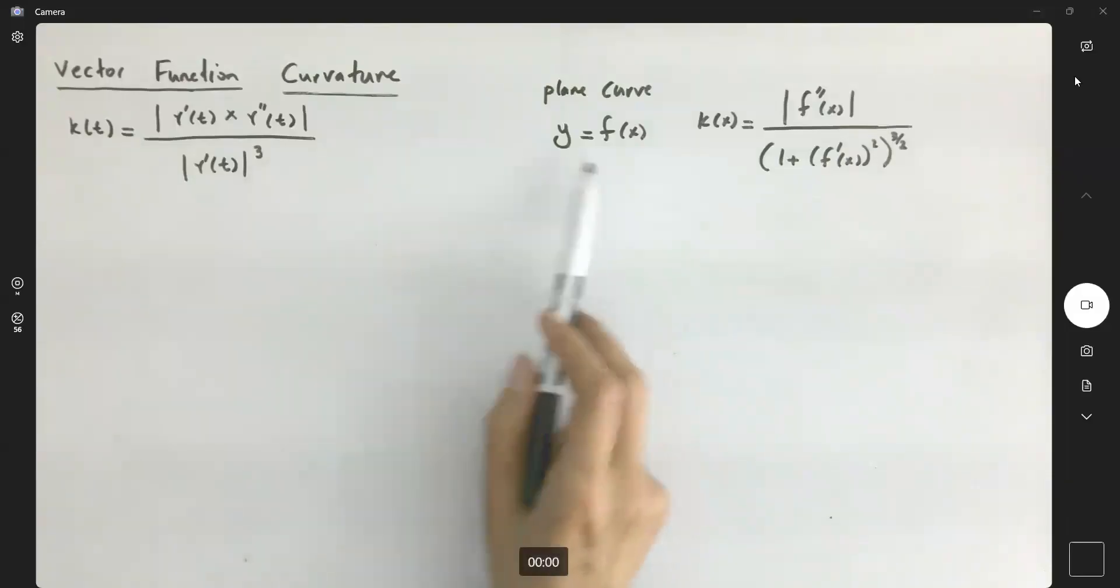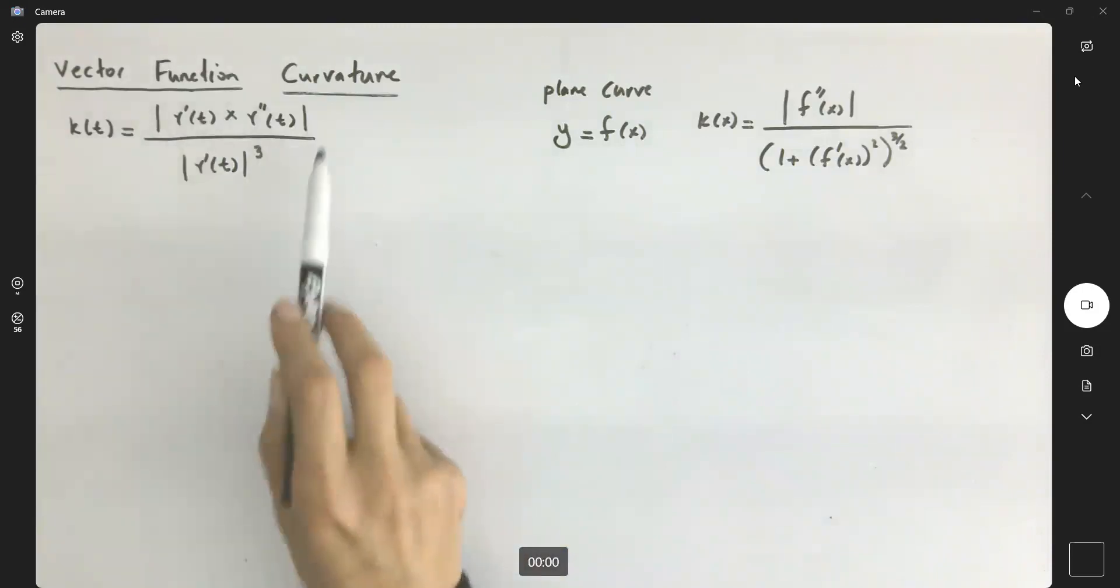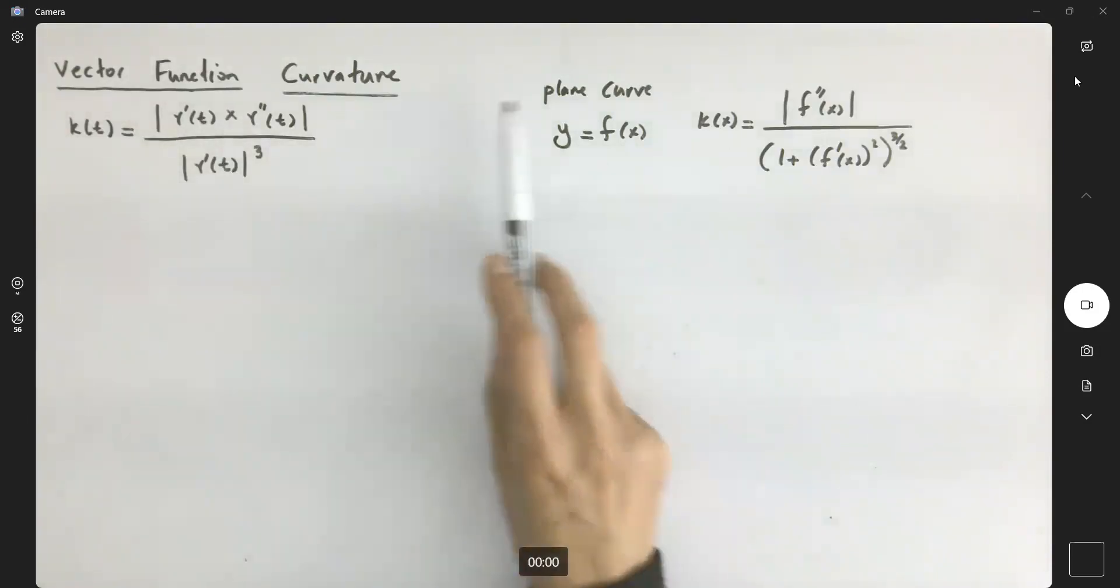So far we introduced two formulas for the curvature. One of them when you have r of t and the other one is when you have a plane curve y equals f of x.